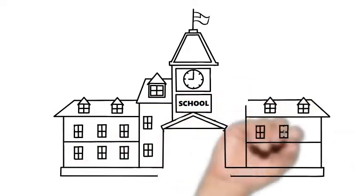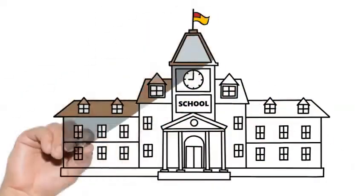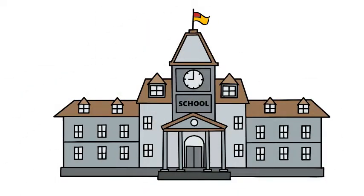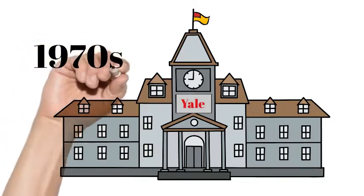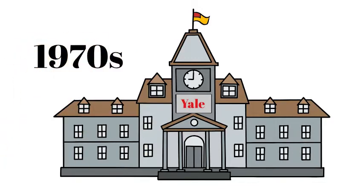The predecessor DRG system was developed at Yale University in the 1970s for statistical classification of hospital inpatient cases. The system aggregates patients by similar disease states and accounts for severity of illness, risk of mortality, prognosis, treatment difficulty, need for intervention, and resource intensity.